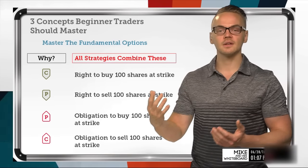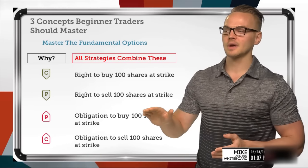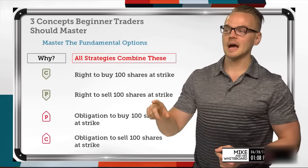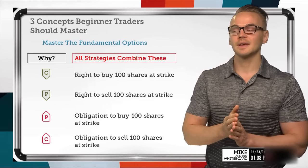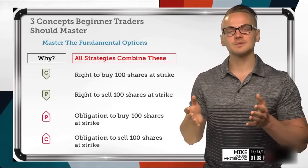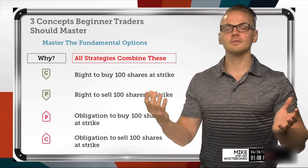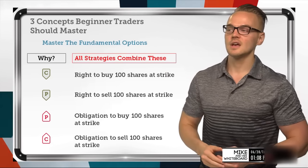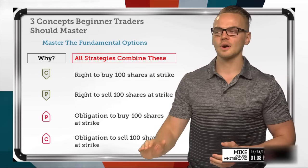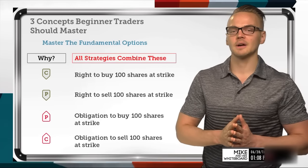Really all the option strategies are just combinations of those four things. Once you learn when each option is profitable and start combining them, you can say: a short put gains money when the stock goes up, the opposite is true with a long put, but if I combine them and my short option is sold for more than my long option is purchased for, that's where the profitability comes in. So the very first thing a beginner trader should hone in on is mastering these four fundamental options and their implications.